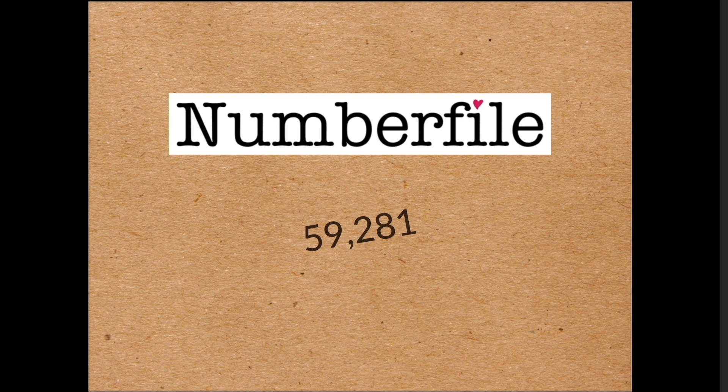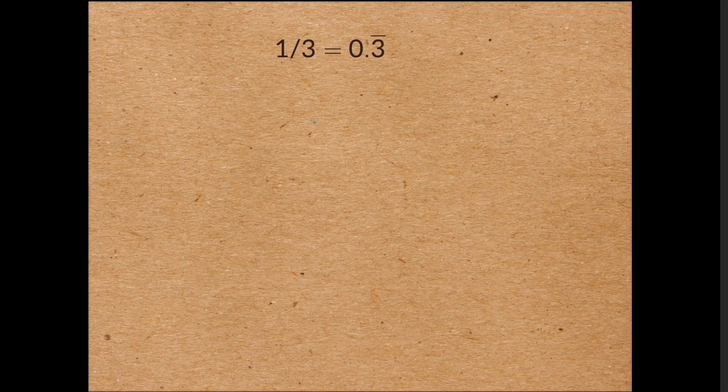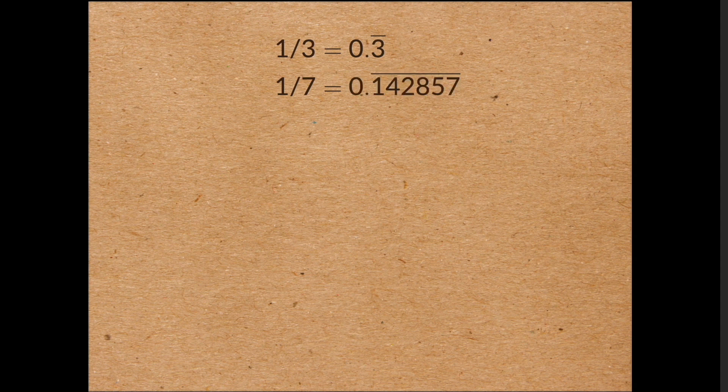If you take a prime p, different from 2 or 5, and you look at the decimal expansion of 1 on p, then you get a repeating decimal. A third is equal to 0.3 recurring. A seventh is equal to 0.142857 recurring, and so on.